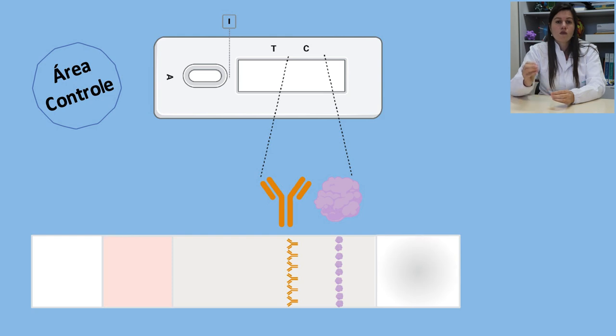Por último, está o filtro absorvente, que é posicionado na extremidade distal da membrana de celulose e que tem como finalidade puxar todo o fluido adicionado no teste, assegurando que não ocorra a volta desse material e evitando, assim, os falsos positivos.